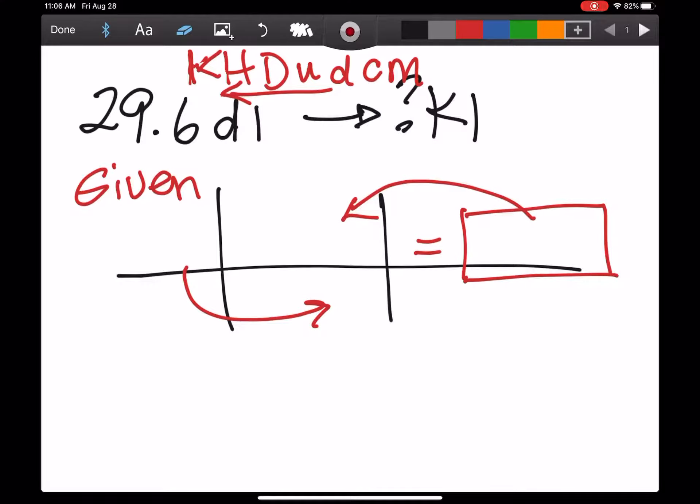Hi everybody, just wanted to do a few more examples for those of you that might need some as we go through converting practice. Here's the question I'm going to work on first: 29.6 deciliters. Remember, little d represents deciliters.